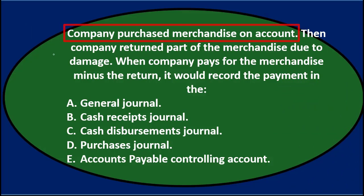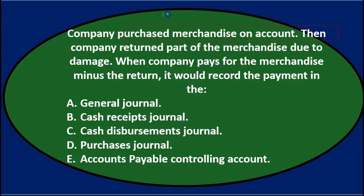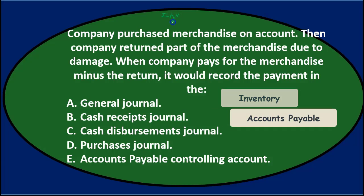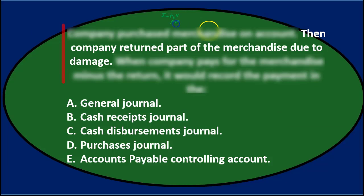So the company purchases merchandise on account — that would typically go to the purchases journal, with the transaction being a debit to purchases or inventory and a credit to accounts payable. That's the first thing that happened — it went into the purchases journal.